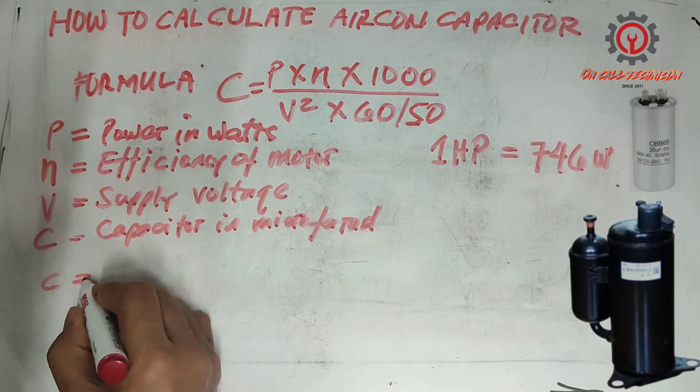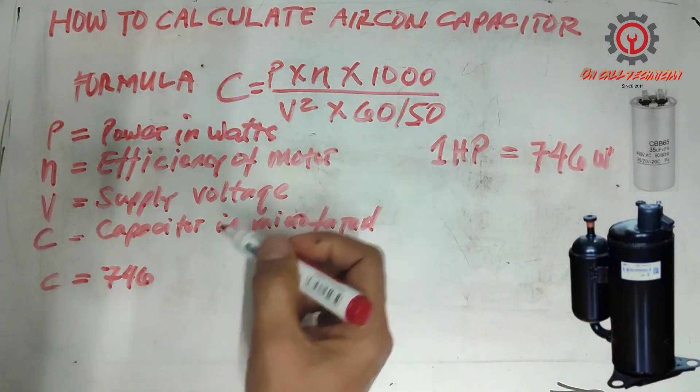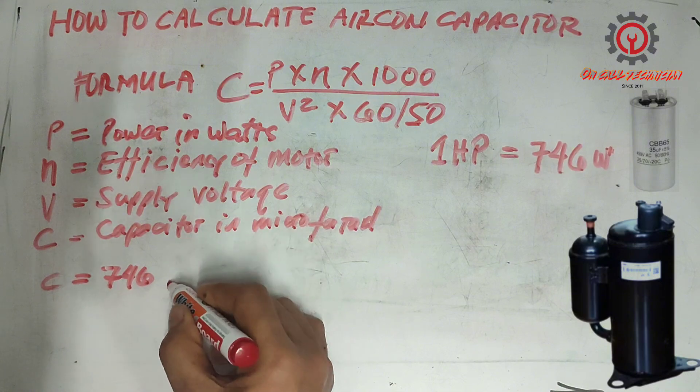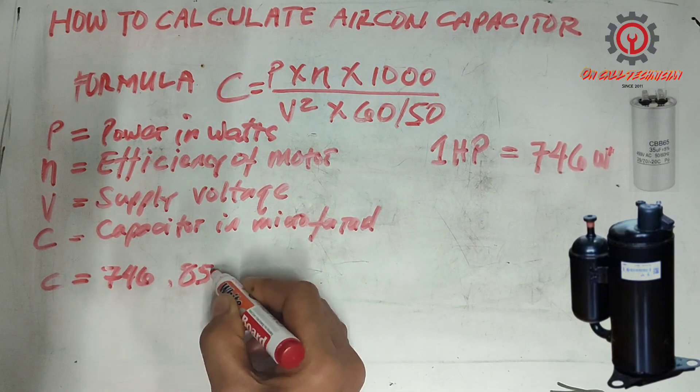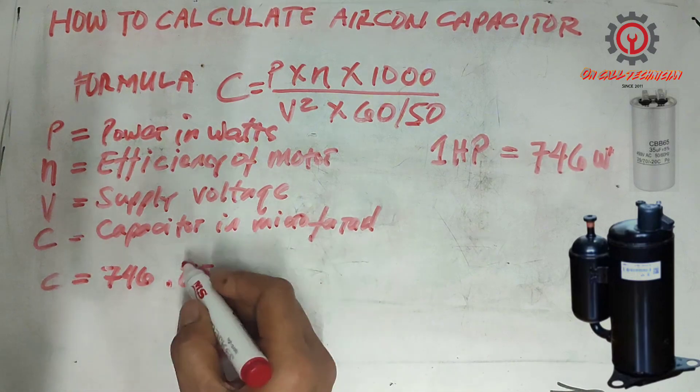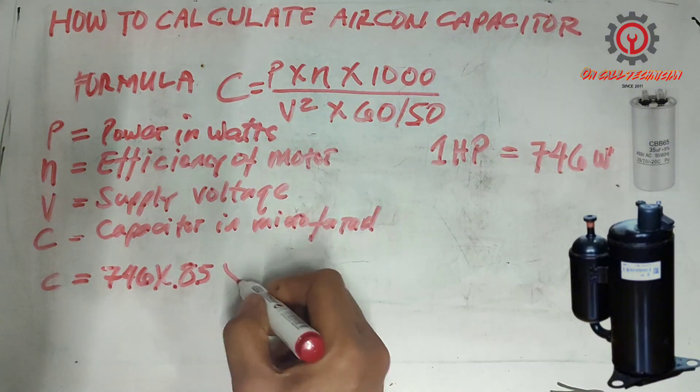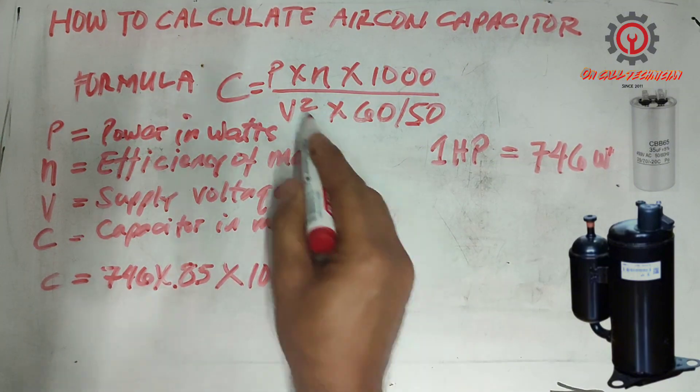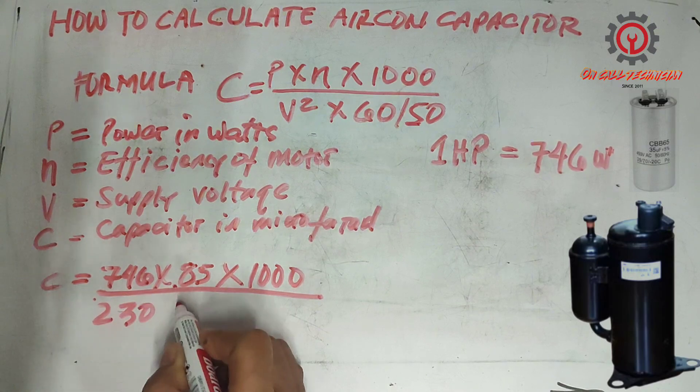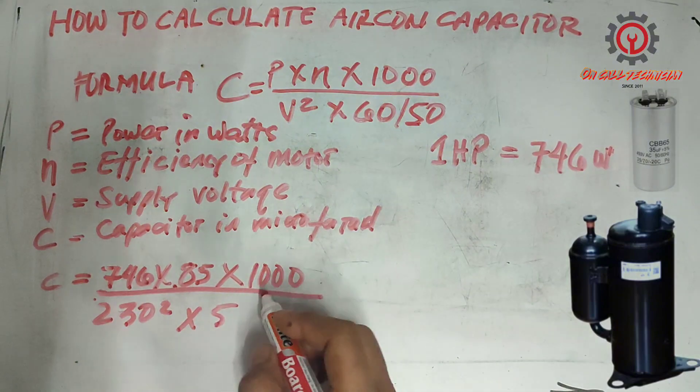C equals 746 watts times efficiency. For example, if the efficiency of the motor is 0.85, or if your efficiency is 90% use 0.9. So 746 times 0.85 times 1000 divided by 230 squared times 60.